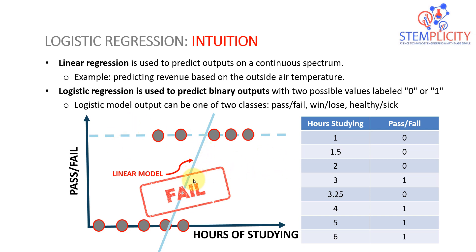We don't have any values in between — our output is either zero or one. We don't need 0.5 or 0.7; we don't need that continuous nature. Also, our output is bounded between zero and one, whereas a linear model can go unbounded — up to two or three, or down to negative two. So a linear model is not a great candidate for classification; it's actually a terrible solution. That's why we move from linear regression to logistic regression.